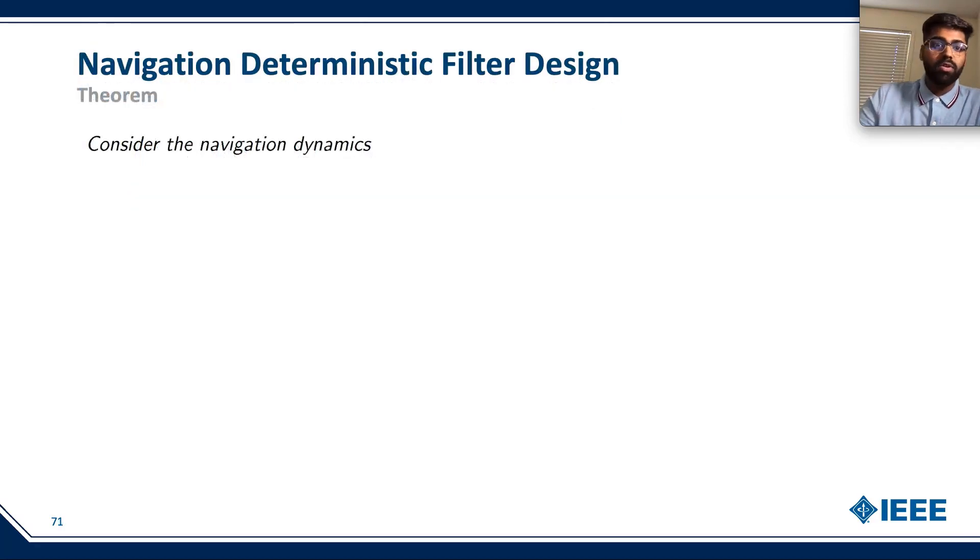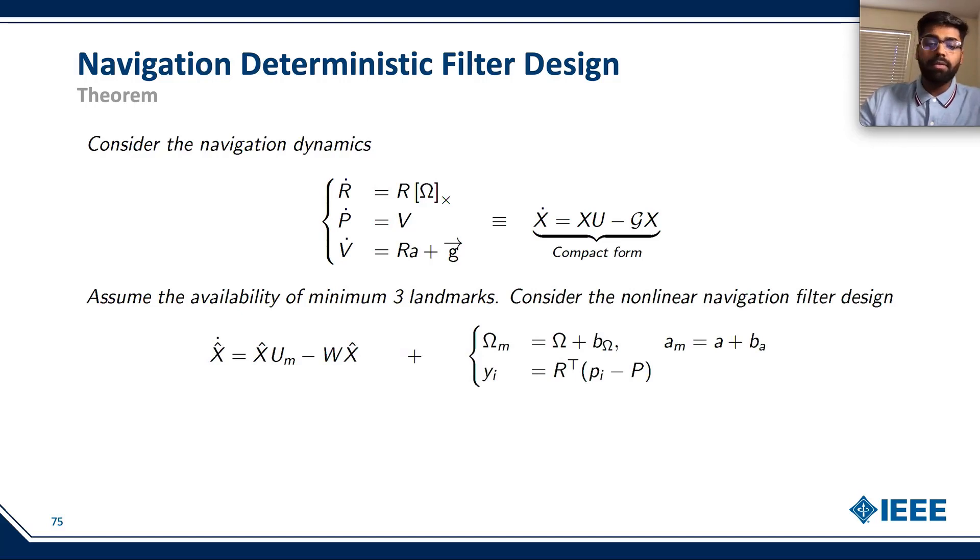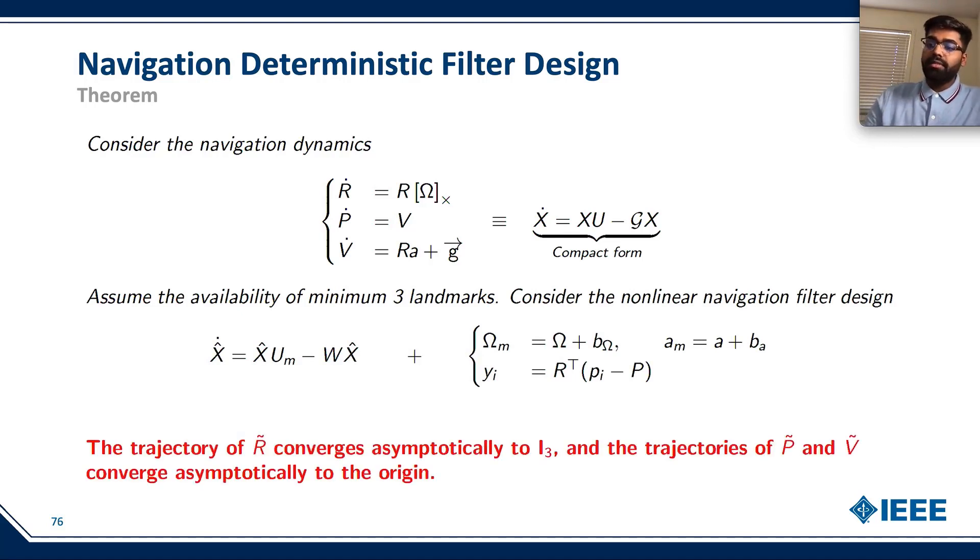Now let's go over to the theorem. Consider the following deterministic filter design. Assume the availability of three landmarks or features and consider the nonlinear filter navigation design to be coupled with the following set of measurements. This way the trajectory of r-tilde converges asymptotically to i3 and trajectory of p-tilde and v-tilde converge asymptotically to the origin.